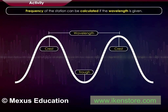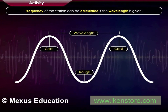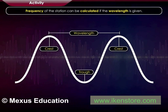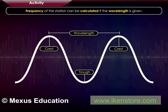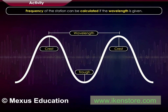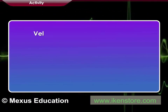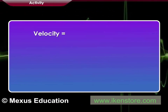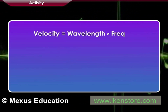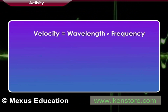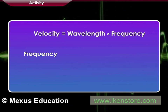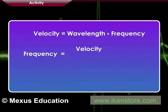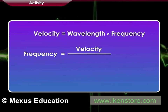The frequency of a station can be calculated if the wavelength is given. Frequency is equal to velocity divided by wavelength.